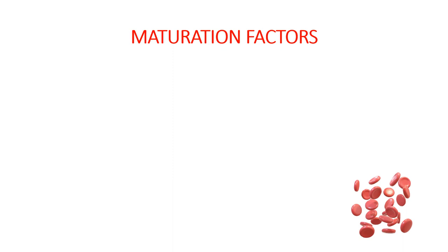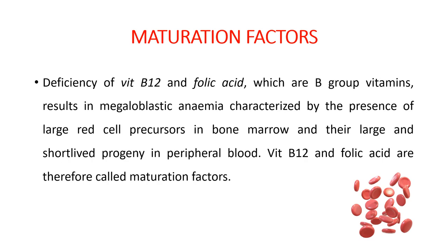The second class is maturation factors. Deficiency of vitamin B12 and folic acid, which are B-group vitamins, results in megaloblastic anemia, characterized by large red cell precursors in bone marrow and large, short-lived progeny in peripheral blood. Vitamin B12 and folic acid are therefore called maturation factors, as they are required for the maturation of precursor RBCs.